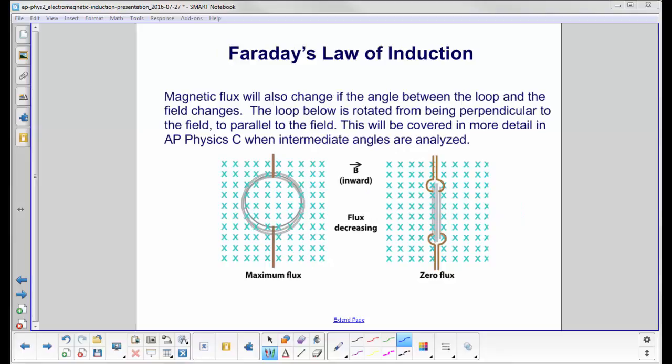You can also change the magnetic flux if the angle between the loop and the field changes. The loop here, or the number of loops, is rotated from being perpendicular to the field, or parallel to the normal, to parallel to the field, or perpendicular to the normal.